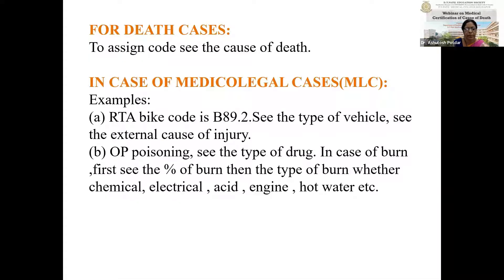In case of death cases, to assign the code you have to see the cause of death. In medical legal cases, you have to see first whether it is an accident, OP poisoning, a burn, or what. For example, in an RTA bike case, first assign the main code for accident, then see the type of vehicle and external cause of injury to assign the subcode. In poisoning cases, see the type of drug. In burn cases, see the percentage of burn — whether it is 80%, 90%, 70% — and then whether it is a chemical burn, electrical burn, or acid burn, and so on.